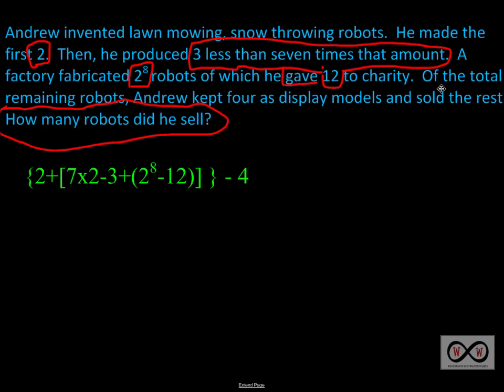Of the total remaining robots, and that was the total remaining. So we're talking about all together from the very beginning through the factory production minus the 12 that he gave to charity. So of the total remaining robots, he kept four as display models. And you can see that represented right here as negative four or minus four. So now we need to solve this expression.